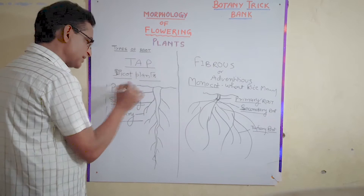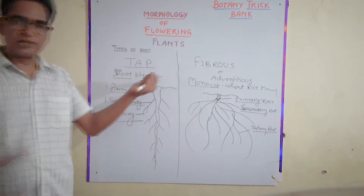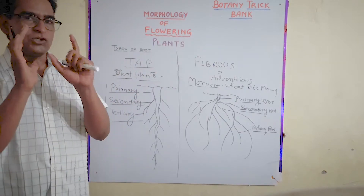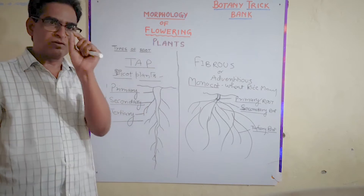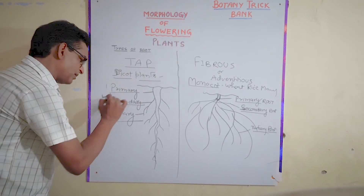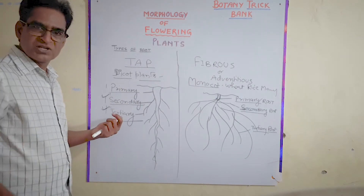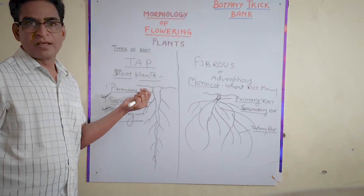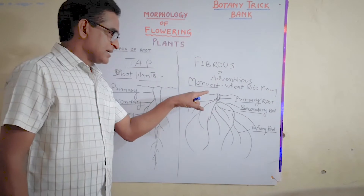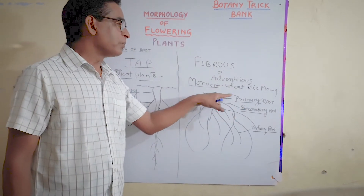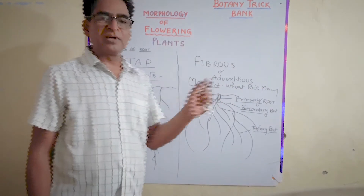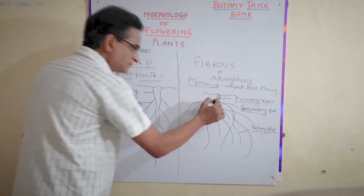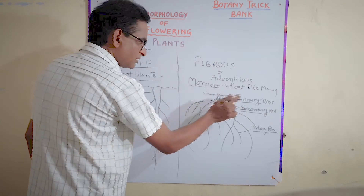The tap root system is the characteristic feature of dicot plants like leguminous plants and Mangifera indica. In the tap root system, the secondary and tertiary rootlets are never developed more than the primary root. In fibrous roots, the secondary and tertiary roots are more developed than the primary root because the primary root is very short-lived — it disappears after a very short time, leading to further development of secondary and tertiary rootlets.